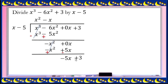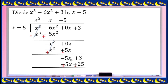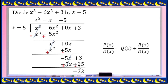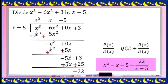Divide the first by the first term: negative 5x divided by x is negative 5. Negative 5 times x is negative 5x; negative 5 times negative 5 is positive 25. Subtract and change the sign of the subtrahend, cancel the first term. 3 plus negative 25 is negative 22. Writing it in standard form: the quotient is x squared minus x minus 5, the remainder is negative 22, and the divisor is x minus 5. Final answer: x squared minus x minus 5 minus 22 over (x minus 5).